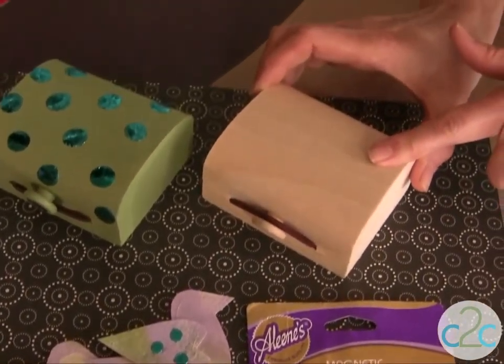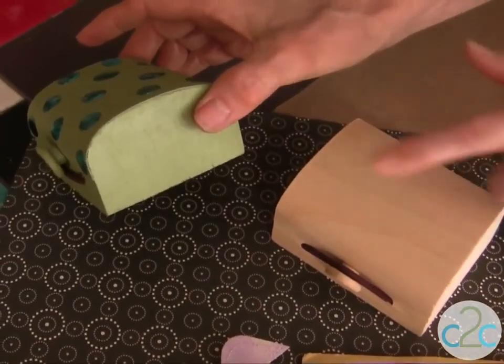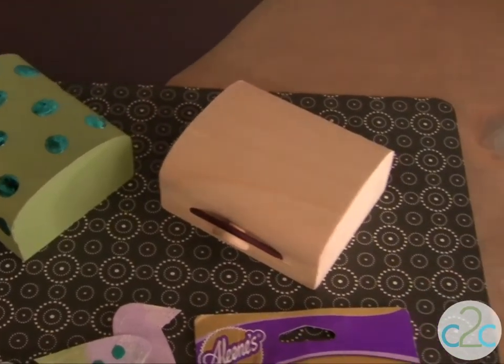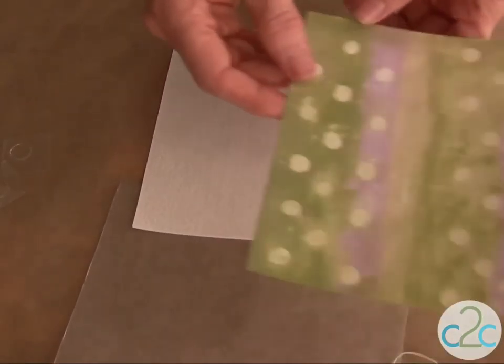The first step in this project is to select your wood box and then you will paint it inside and out with the color of your choice. Set that aside to dry and while that's drying I want to show you a fun technique where you can create your own paper.